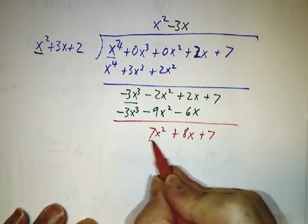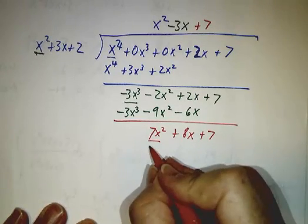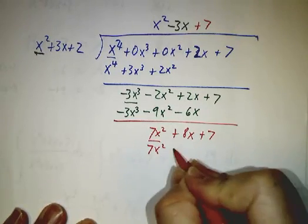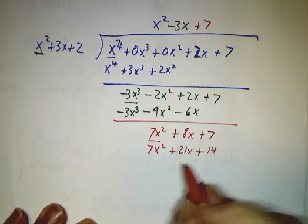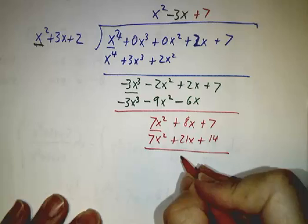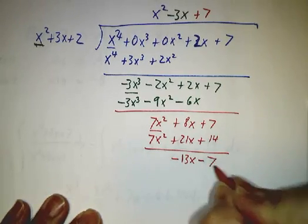7x squared divided by x squared is 7. So we subtract off 7x squared plus 21x plus 14. And our remainder is negative 13x minus 7.